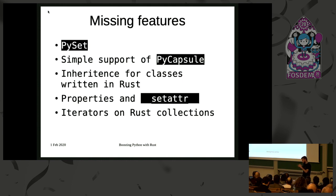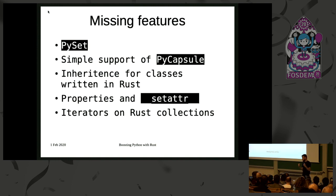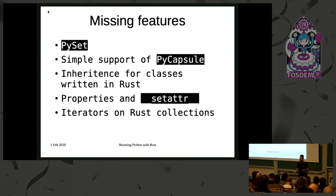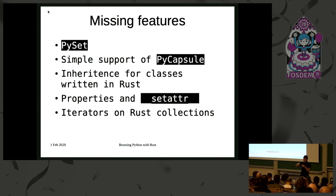There is also more hairy stuff: inheritance for classes written in Rust. If you create a Python class from Rust so that it has a Rust backend, and you try to inherit from that in Python code, it will completely crash at interpreter time, telling you it's not a valid base type. This has to do with the fact that if you try to inherit from this class and forget to call init, Rust needs its memory to be initialized. So you can't really extend a Rust-backed Python type — you have to use composition over inheritance, which makes the performance and maintainability unhappy.